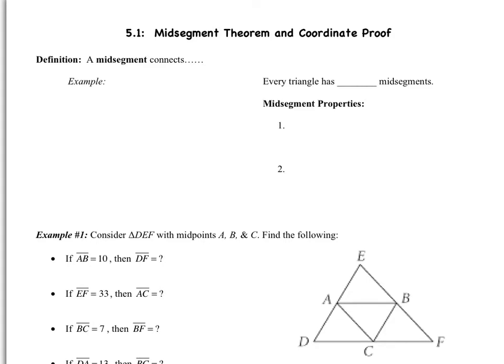So first, what is a midsegment? A midsegment connects two sides' midpoints. So let's look at an example. If we have a triangle, there's three midpoints. Remember, a midpoint bisects the segment, so I need to show that.